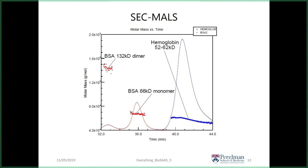Within a peak, even if you have a consistent retention time implying a particular apparent molecular mass or Stokes radius, the breadth of the peak shape can indicate polydispersity in molecular mass. So the hemoglobin example could represent sampling of an equilibrium in those conditions.